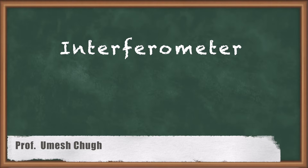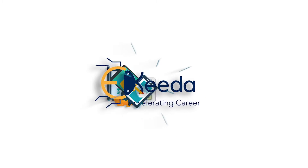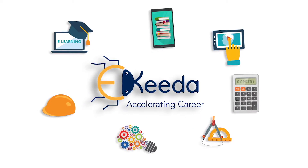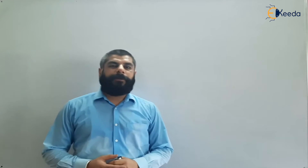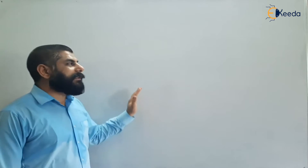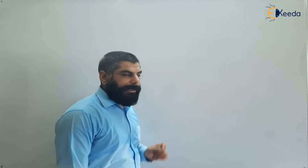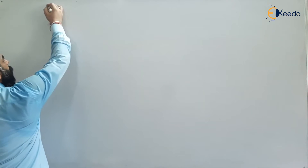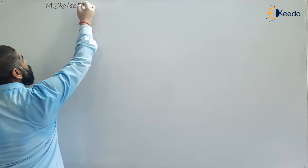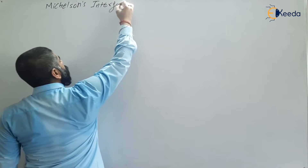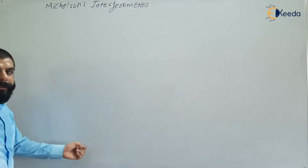In this video we will discuss the interferometer. An interferometer is a device used to observe or produce interference. The first device is Young's double slit experiment, and the second is the interferometer. We will discuss the Michelson interferometer — how it works and how it generates interference.